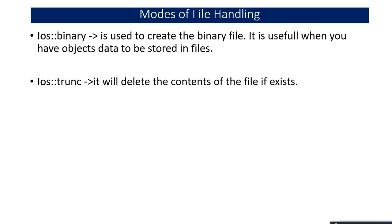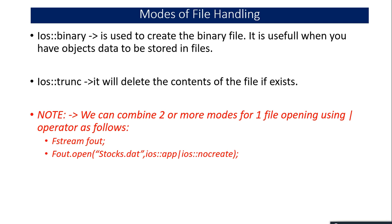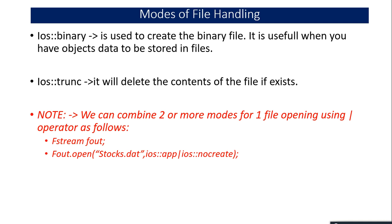Truncate mode deletes the contents of the file if it already exists. These are the individual modes, but sometimes you may need two or three modes together in one object. You can combine two or more modes using the pipe operator, which is the OR operator. For example, you create an fstream object and call fo.open on a file with append mode combined with no-create mode, meaning if the file doesn't exist, give an error rather than creating it.